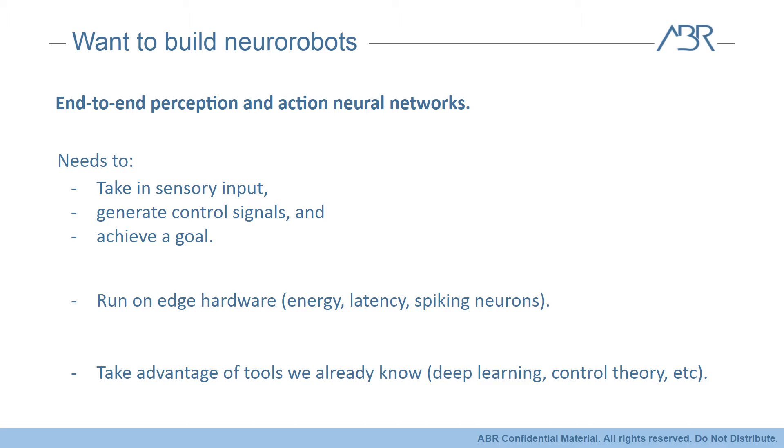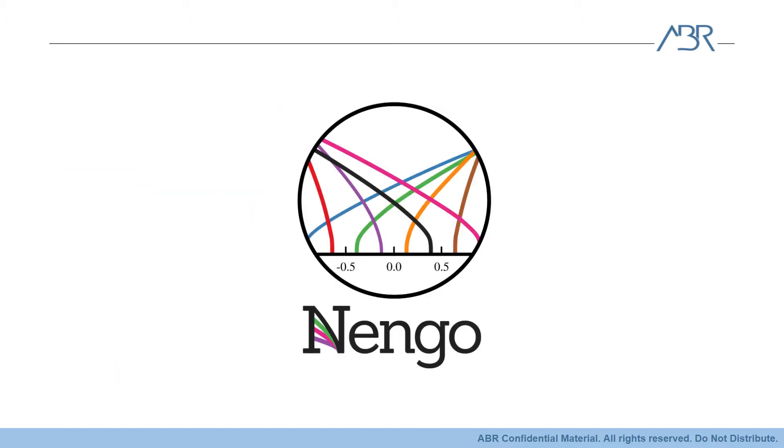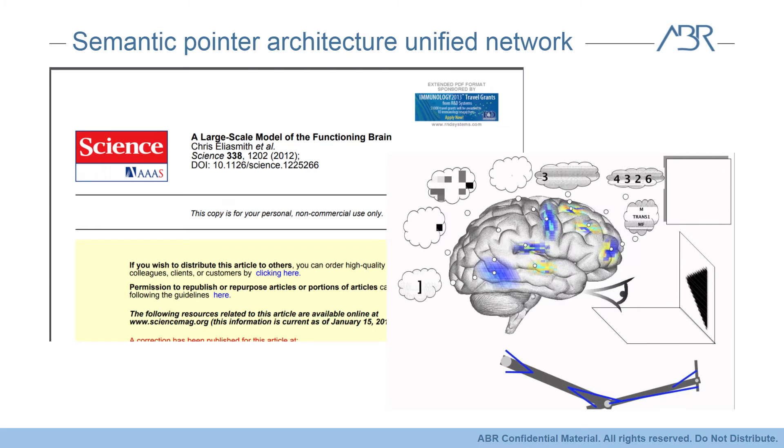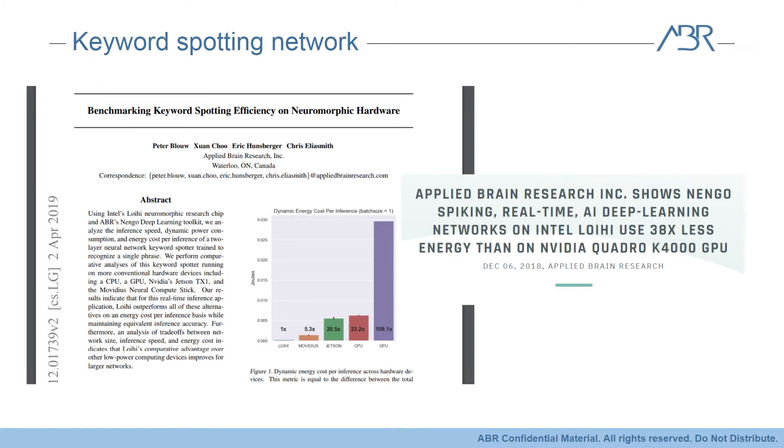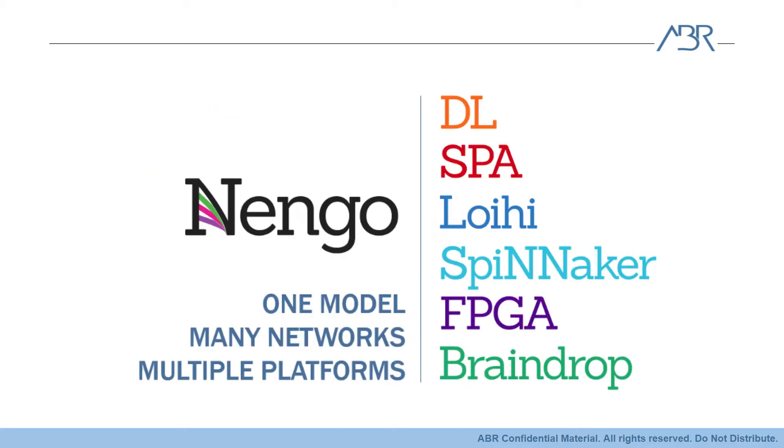The tool that I'll be using to do all of this is called Nengo. It's Applied Brain Research's neural development platform and has been used for a whole host of various applications. From the very neuroscientifically motivated world's largest functional brain model called SPAUN to the very industrially motivated low-power neuromorphic keyword spotting. One of the key features of Nengo is that it compiles to a bunch of different backends. So we can design our neural network on our workstation CPU or GPU and then take that same design and run it in super efficient edge hardware like Loihi, Spinnaker, FPGA, or the Braindrop to name a few.